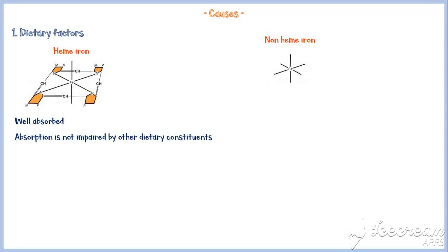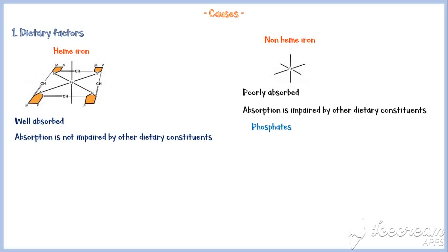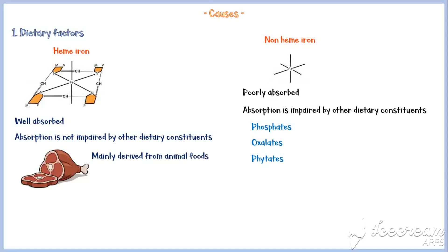Non-heme iron, however, is poorly absorbed into the body because its absorption is impaired by other dietary constituents, such as phosphates, oxalates, and phytates. Meat is an important source of heme iron because heme iron is mainly derived from animal foods.